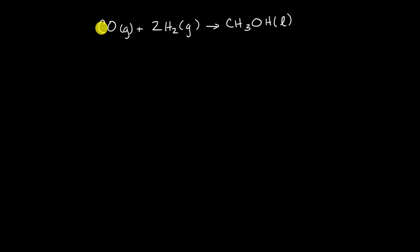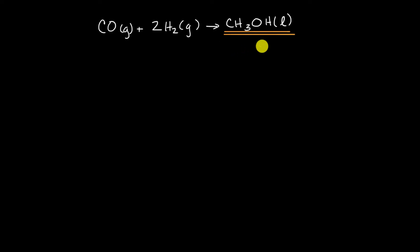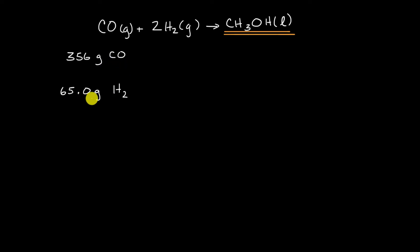We have a reaction where you can take carbon monoxide gas and hydrogen gas, and when they react, you produce methanol. This is actually pretty interesting — methanol has many applications; one of them is race car fuel. What we're going to do is study how much methanol we can produce if we have 356 grams of carbon monoxide and 65.0 grams of molecular hydrogen. Figure out how many grams of methanol will we produce.